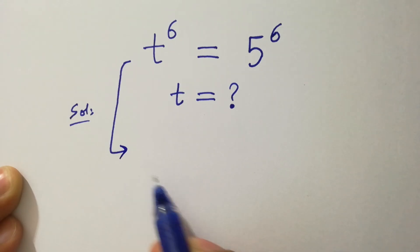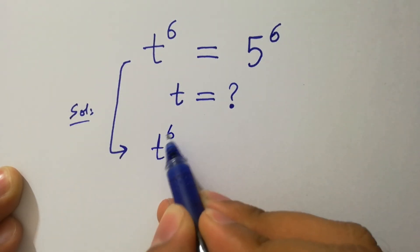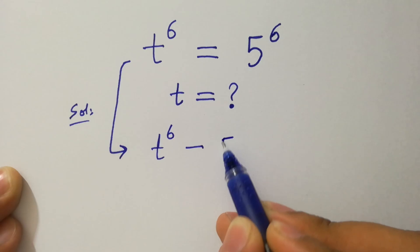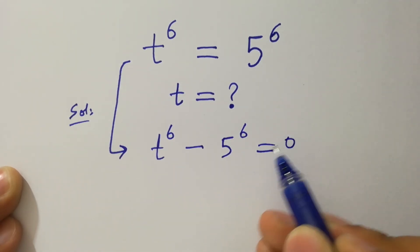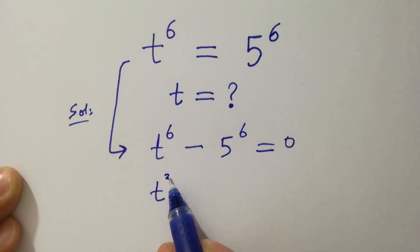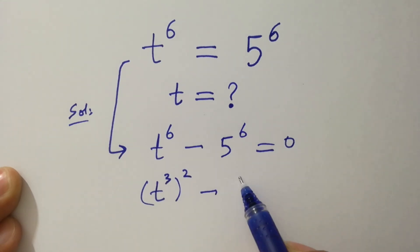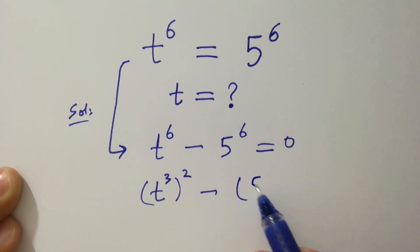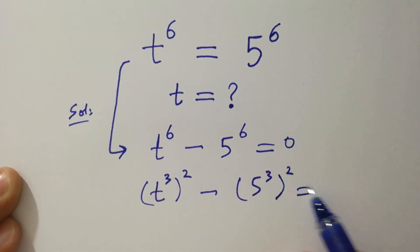It can be written as t to the power 6 minus 5 to the power 6 equal to 0, which is the same as t to the power cube, to the whole power square, minus 5 to the power cube, to the whole power square, equal to 0.